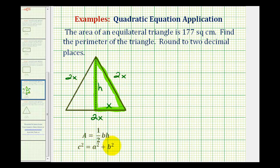And we'll do this by using the Pythagorean theorem. So using the Pythagorean theorem, we can write the equation h squared plus x squared must equal 2x squared. So we have h squared plus x squared equals 4x squared. So h squared is going to equal 3x squared.